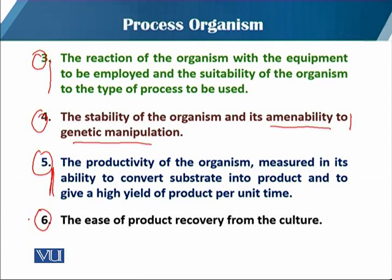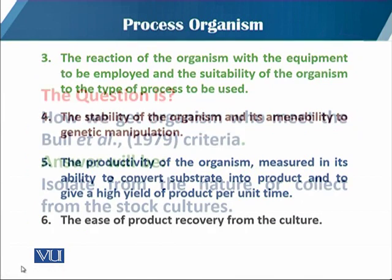The sixth and last criteria cited by Bull et al. 1979 is the downstream ease of product recovery from the culture. These are the six criteria to keep in mind while selecting the process organism.